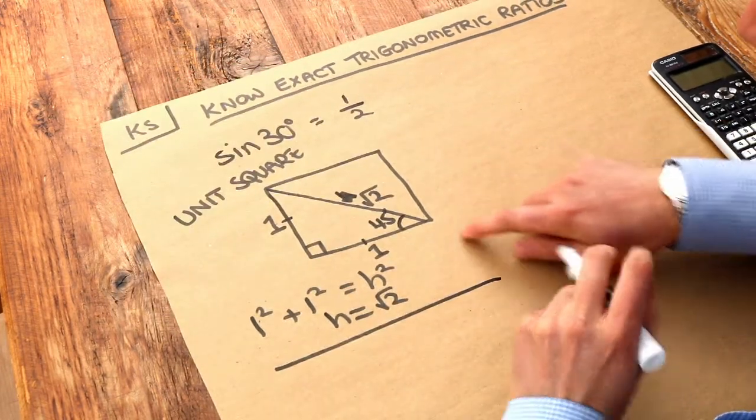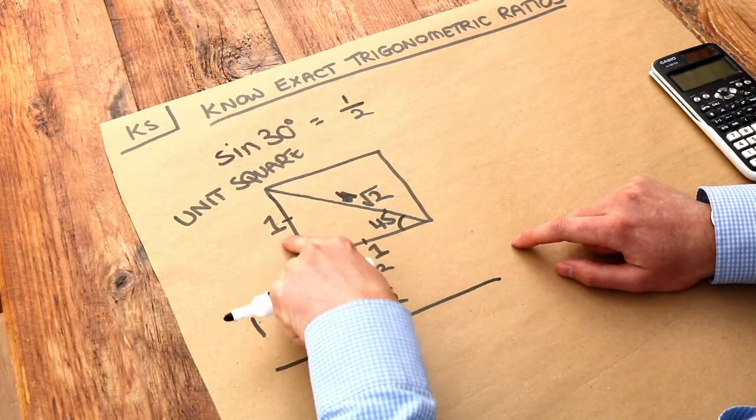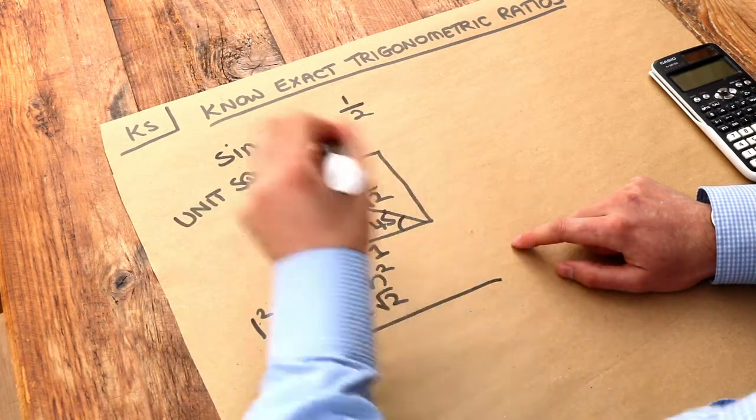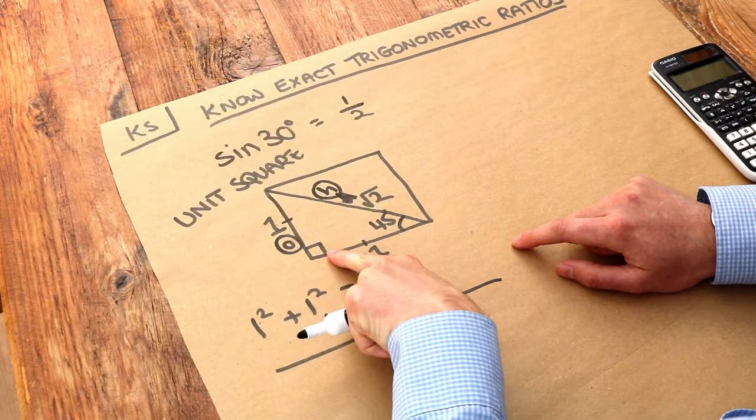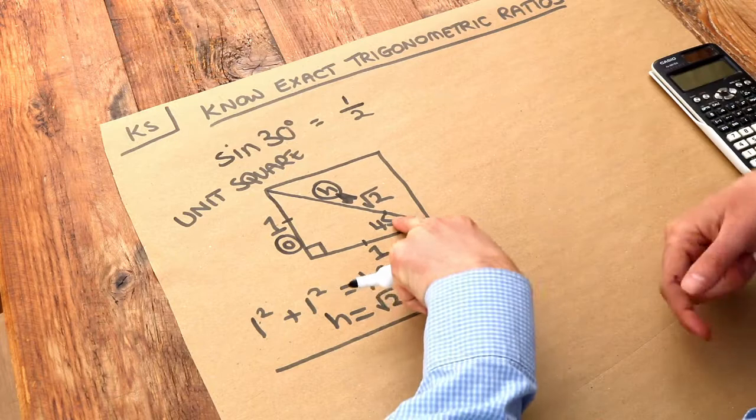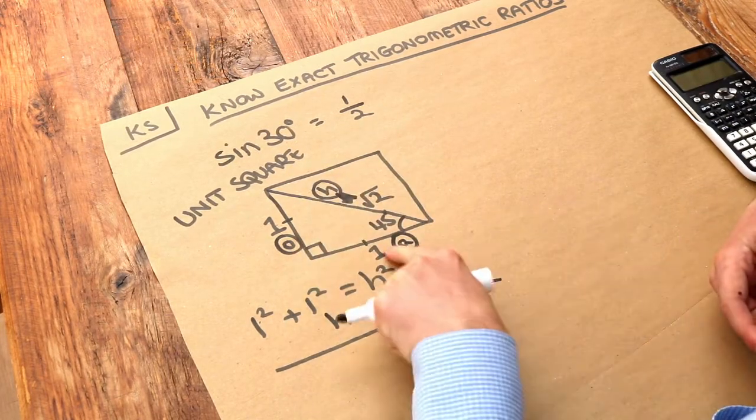So if we label the sides relative to this particular angle, this side is opposite to that angle, so that's O. This side is the hypotenuse, because it's the longest length which is always opposite the right angle. And then the side which is adjacent to the angle of interest, we label as the adjacent. I tend to put these in circles.